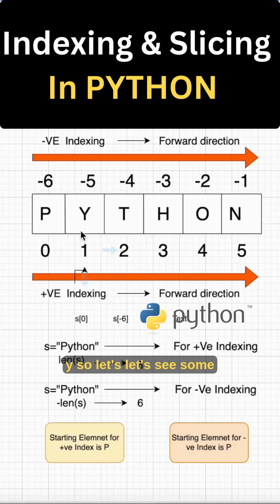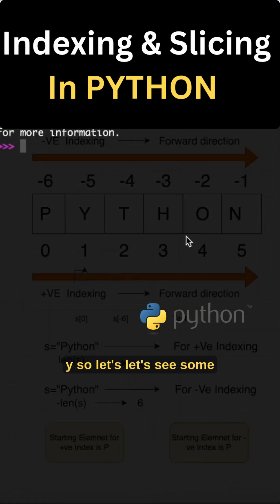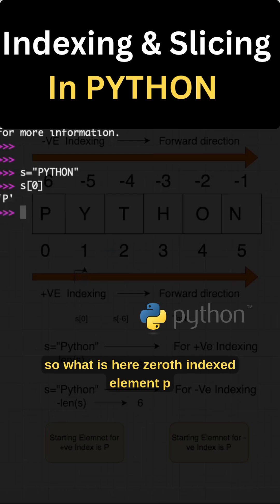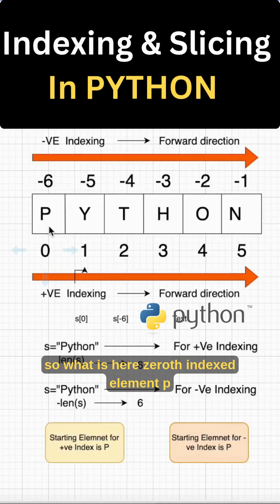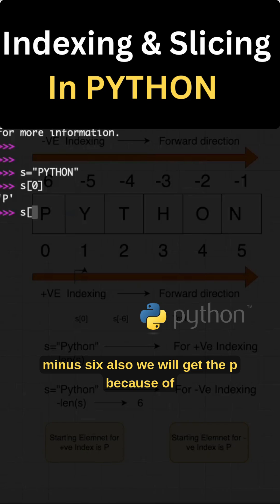Let's see some examples. S is equal to, I have a subject called Python, right? I want to get the 0th indexed element. What is 0th indexed element? P. Suppose for minus 6 also we will get the P because of flexibility we have. So we can give minus 6 and you will get P, same answer.